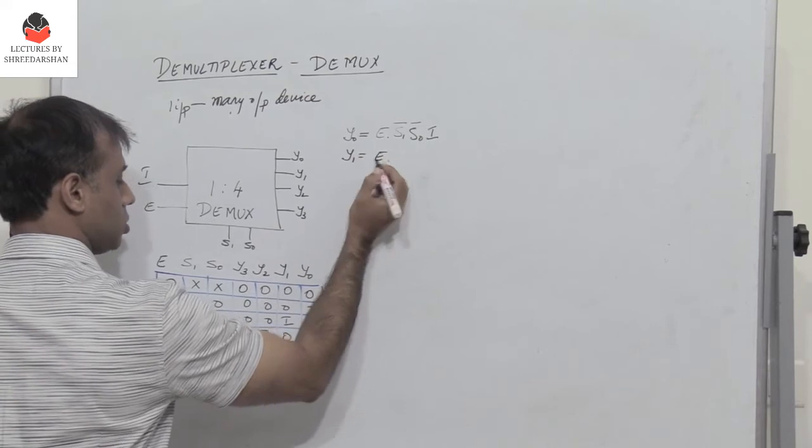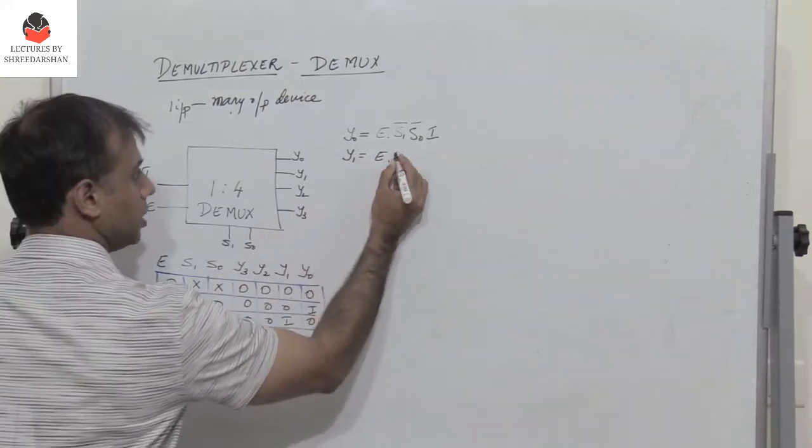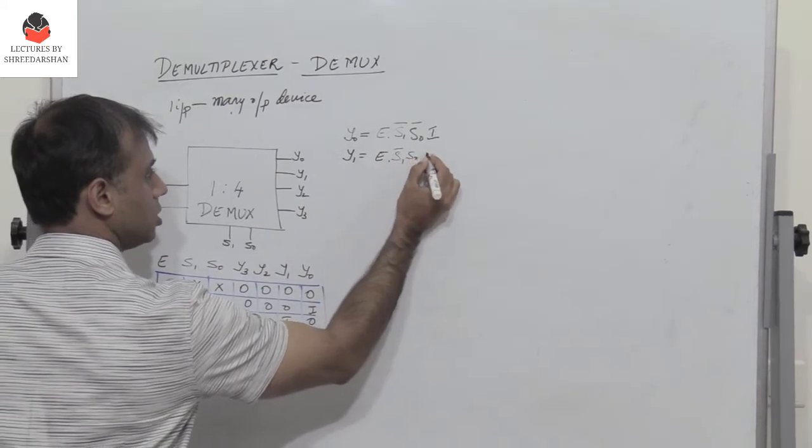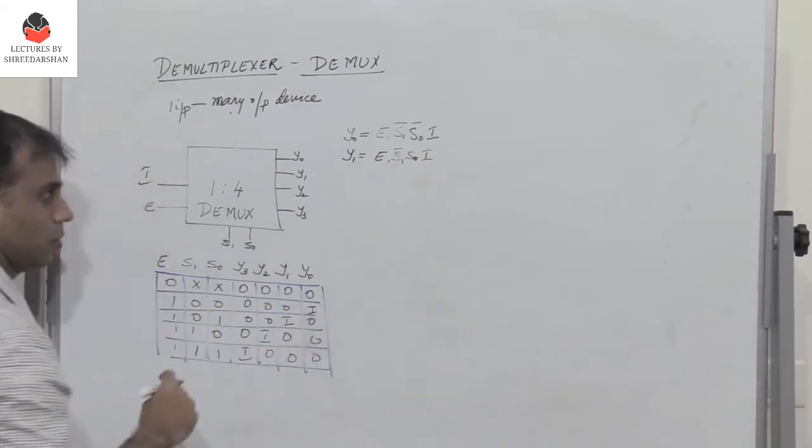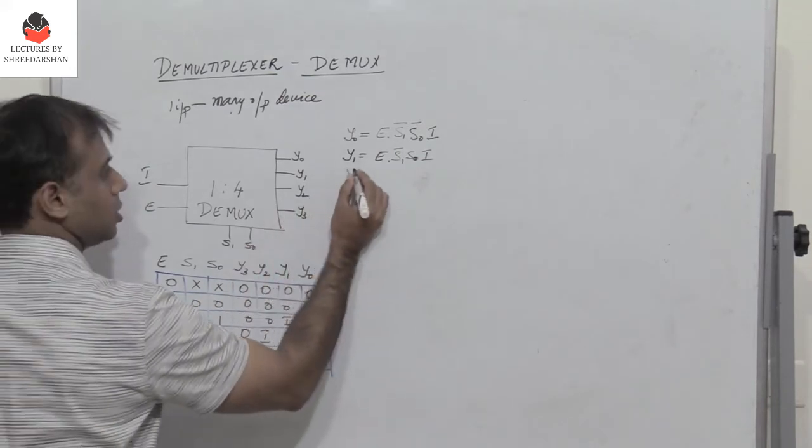The next one, y1 equals e into I have s1 bar, s0. So s1 bar, s0, into i. So I hope you have already got the idea of how we can write the expressions for the output.